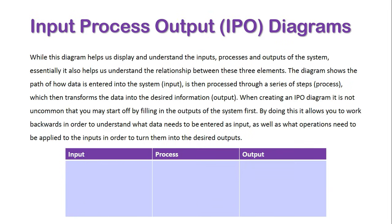While this diagram helps us display and understand the inputs, processes, and outputs of the system, it also helps us understand the relationship between these three elements. The diagram shows the path of how data is entered into the system (input), is then processed through a series of steps (process), which transforms the data into the desired information (output).